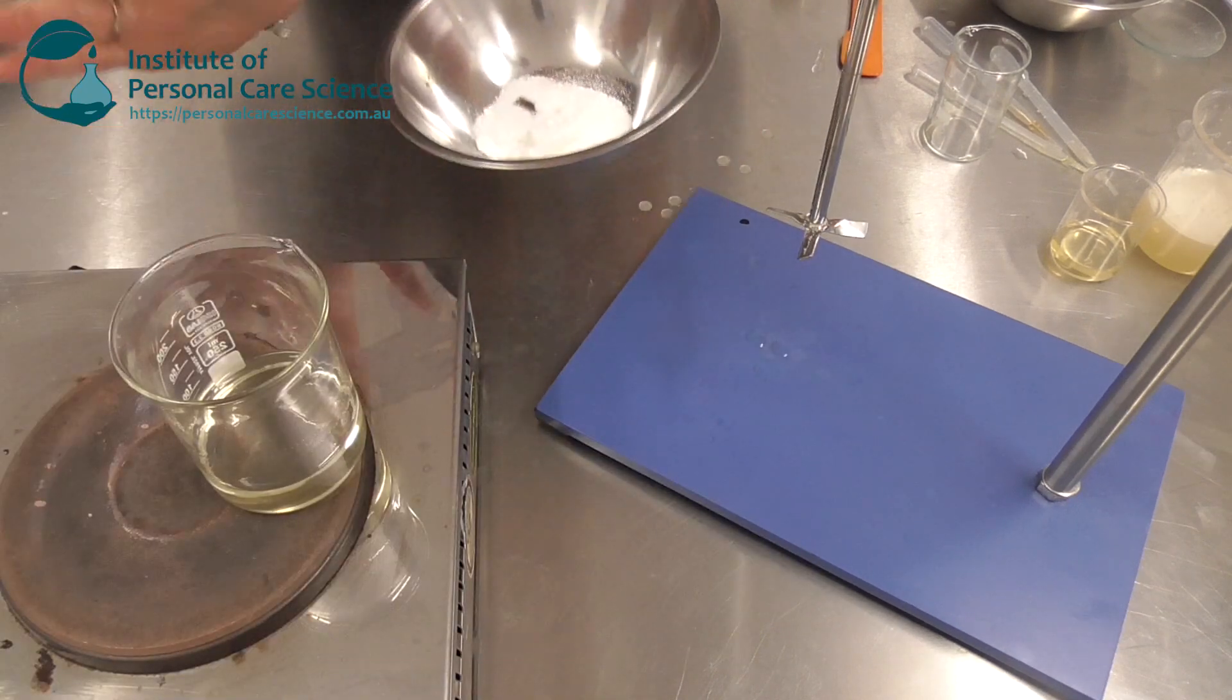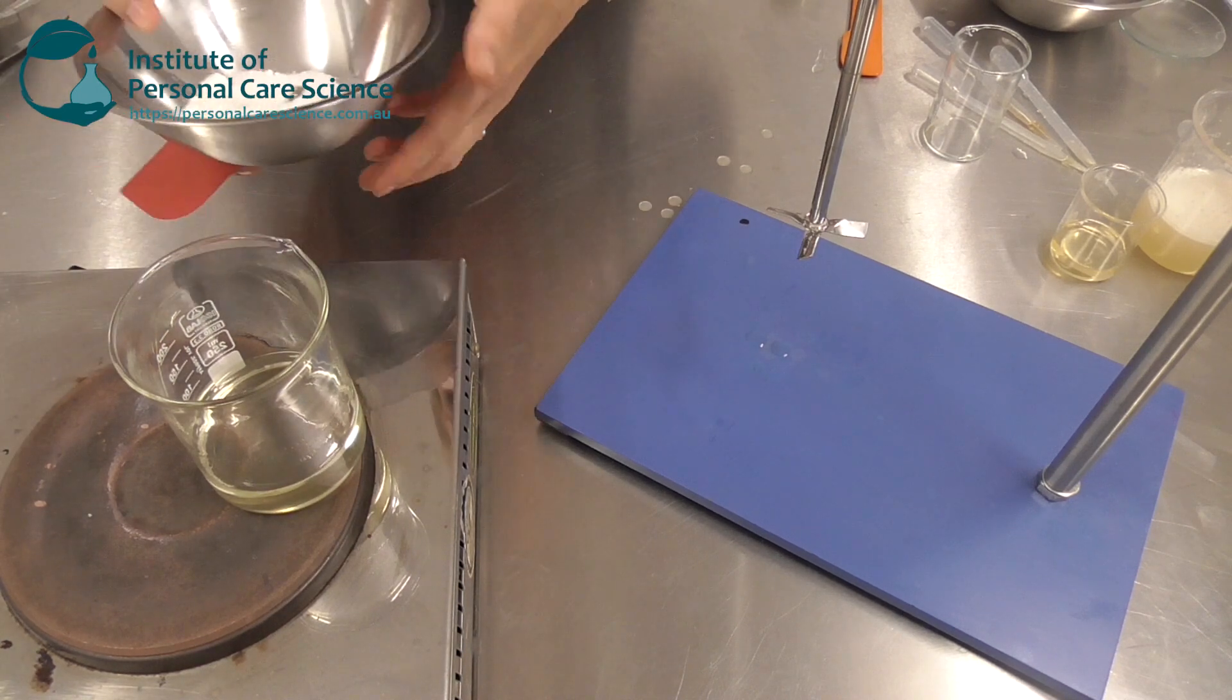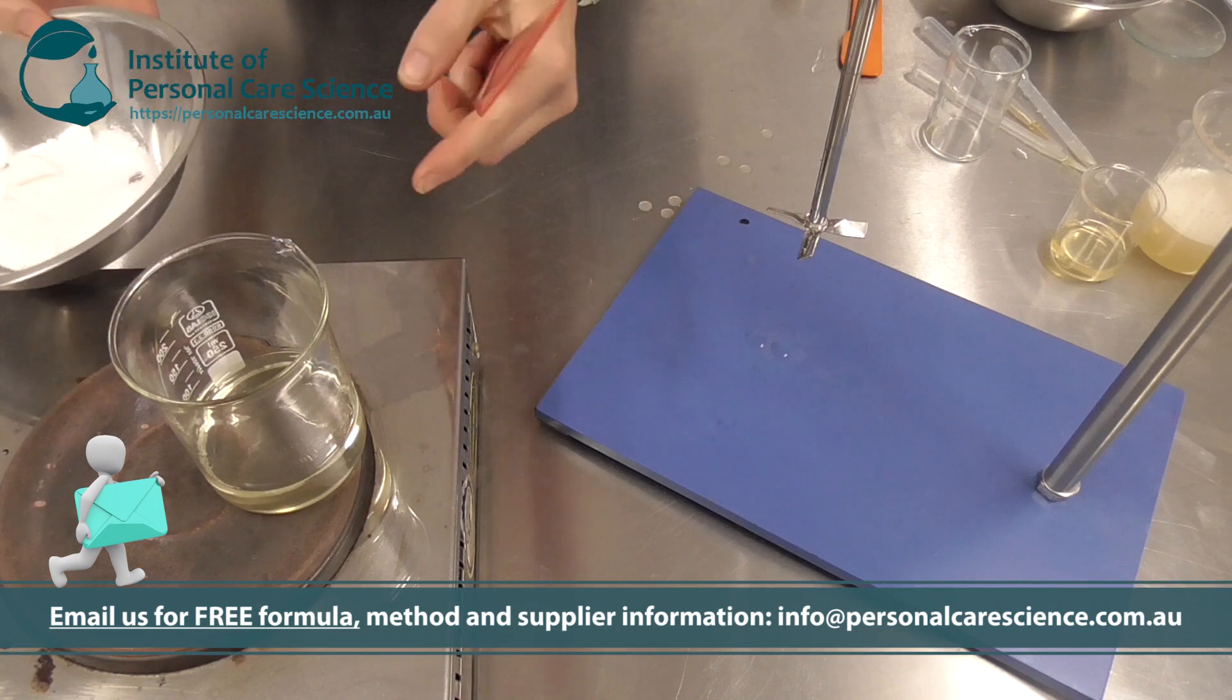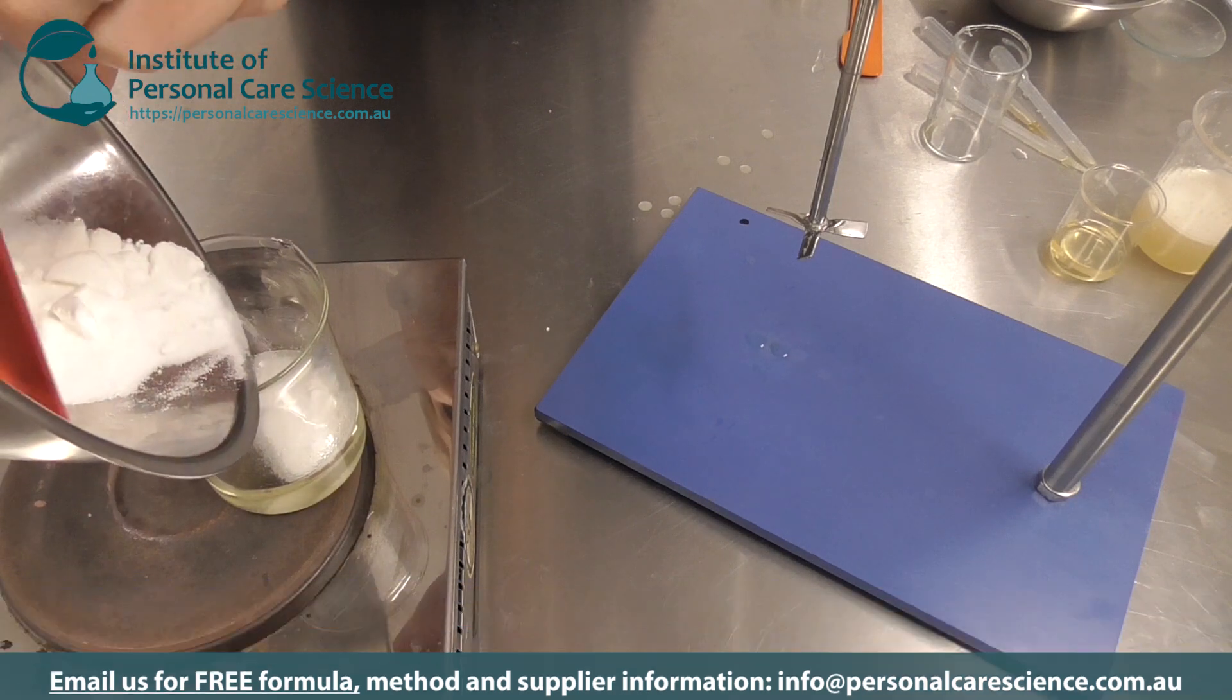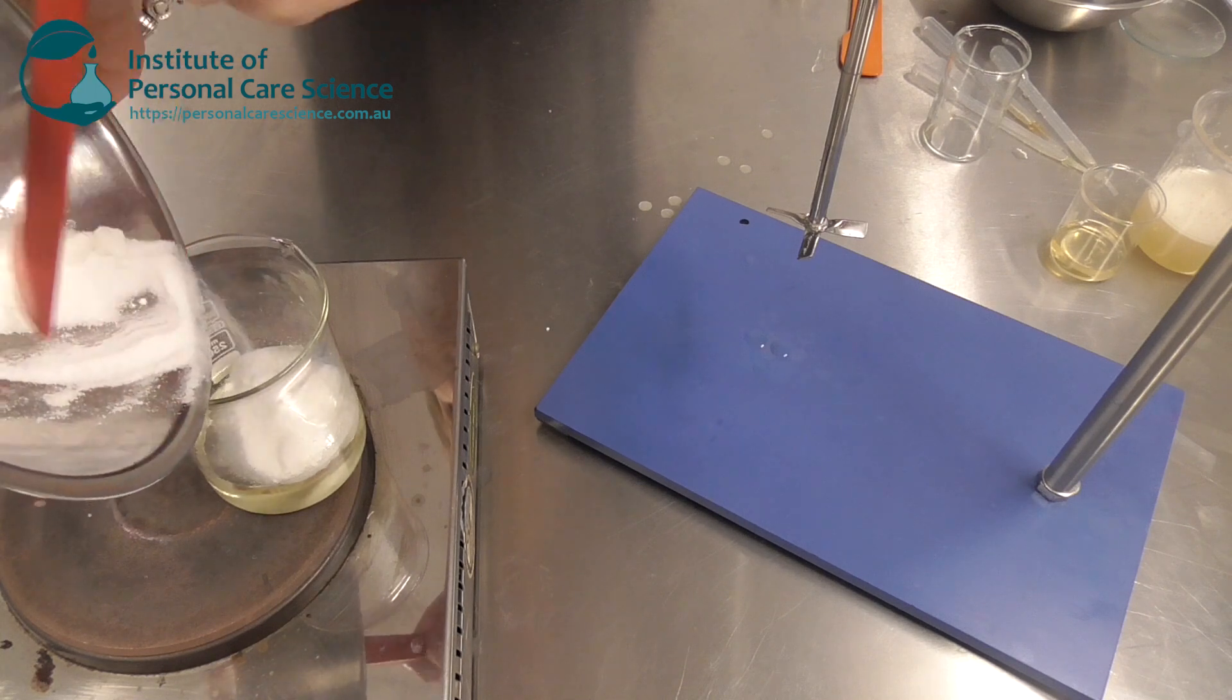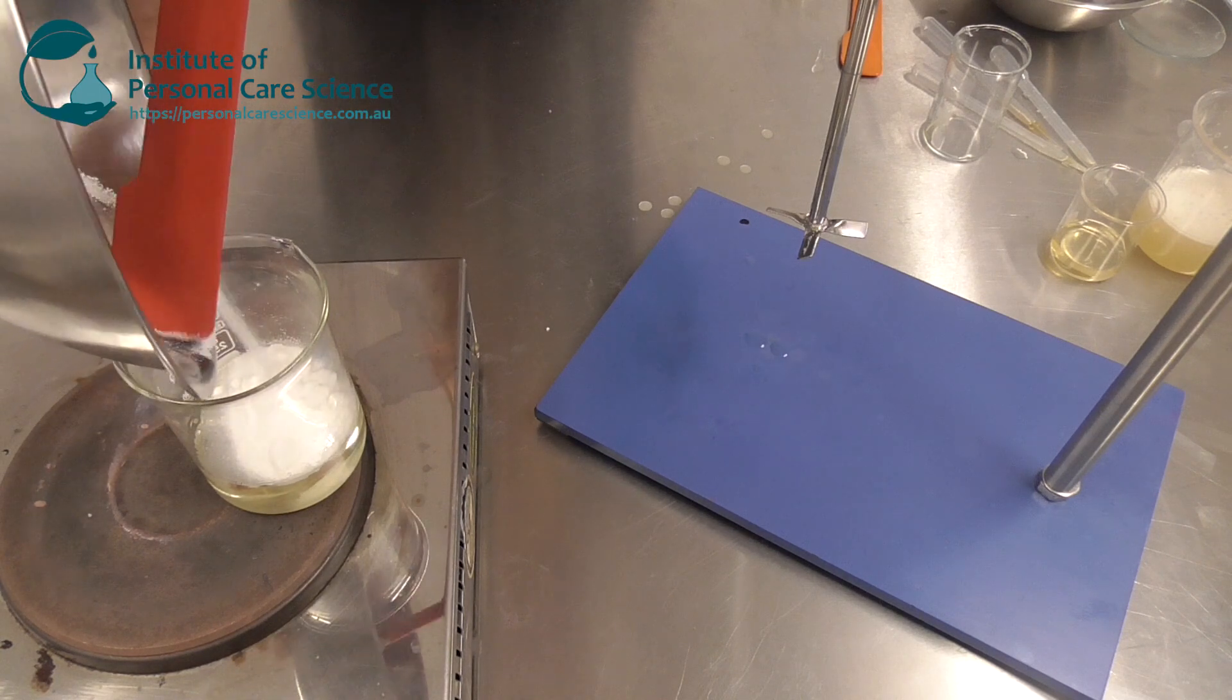Now for the cleansing balm, very similar formulation concept, except now we need to add some waxy materials to help form the balm consistency. Now we can't just use ordinary waxes otherwise they'd feel very waxy and have an undesirable drag on the skin, so we use low HLB waxy emulsifiers.